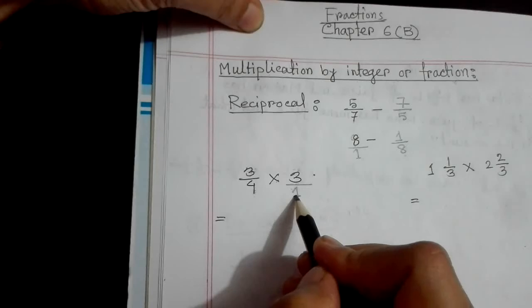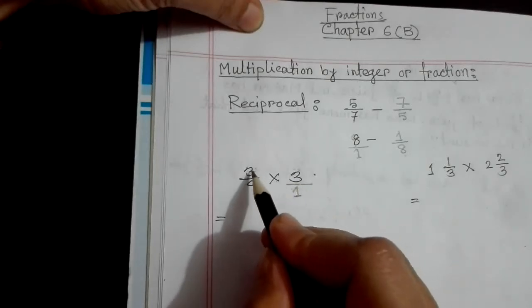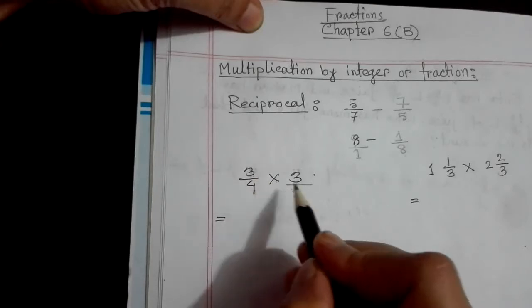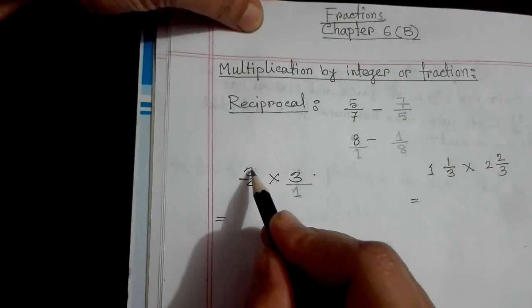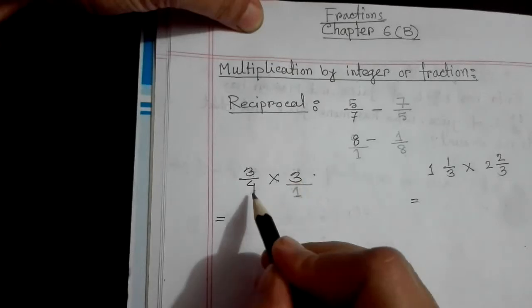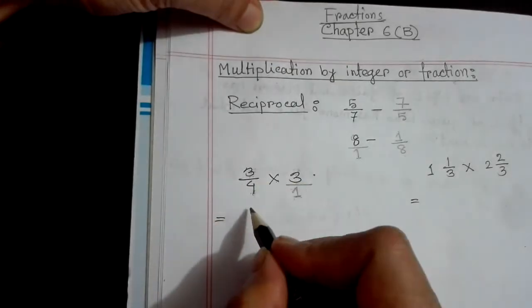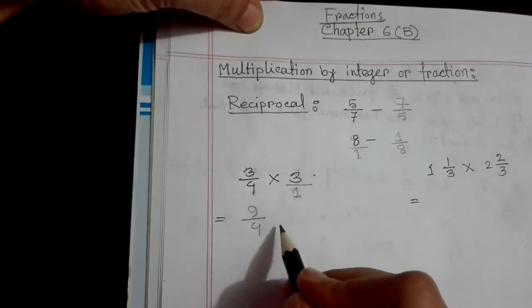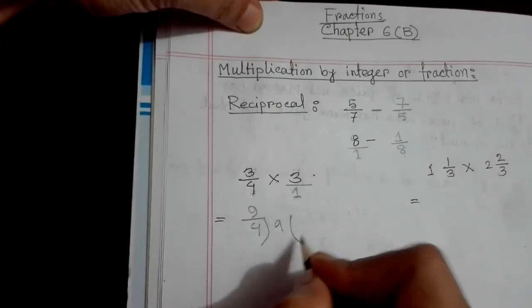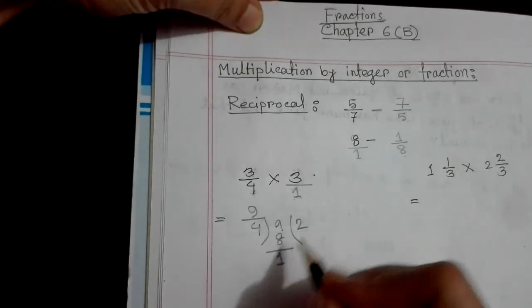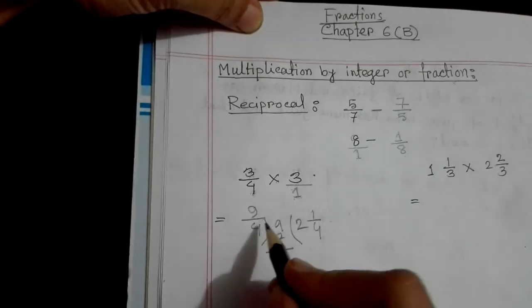We put the whole number below, with 1 in the denominator. Then multiply: 3 times 3 equals 9 in the numerator, 4 times 1 equals 4 in the denominator. So this is the answer: 9 by 4.